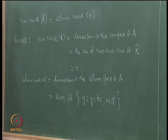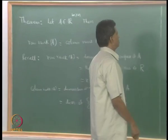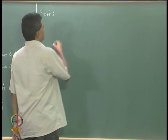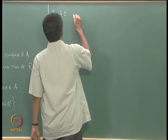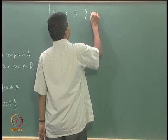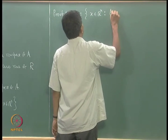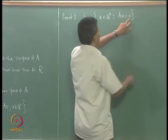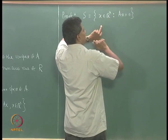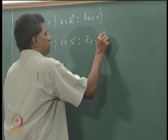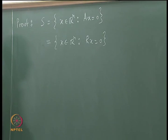The number of nonzero rows of the row reduced echelon form of matrix A is the row rank of A. We want to show these two — row rank and column rank — are equal. The proof begins by looking at S, the solution set of the system Ax = 0. S is a subspace of R^n, and the solution set does not change when we pass to the row reduced echelon form.